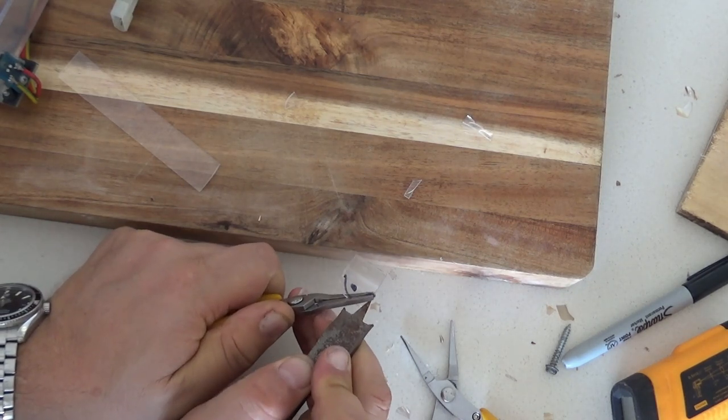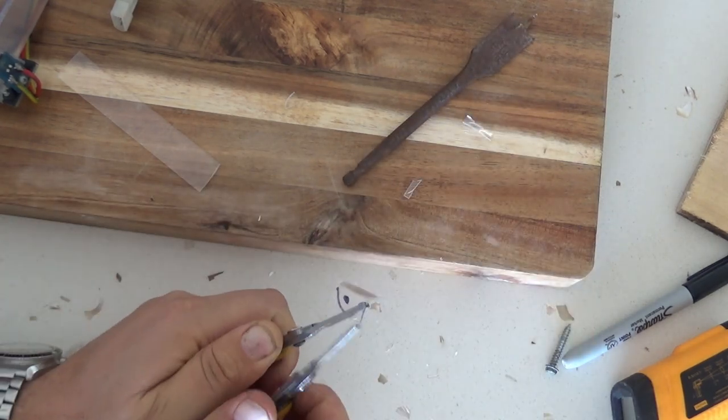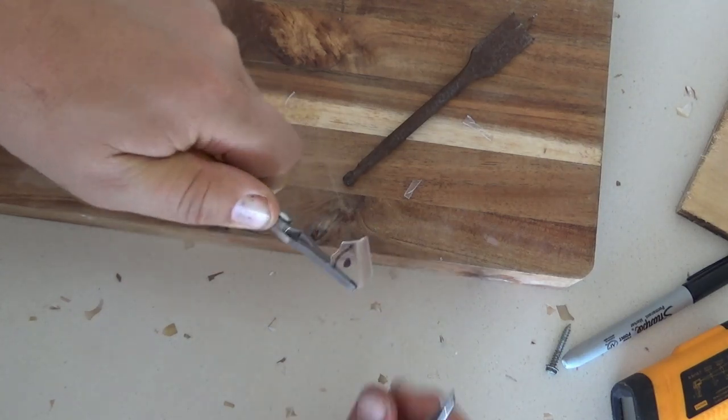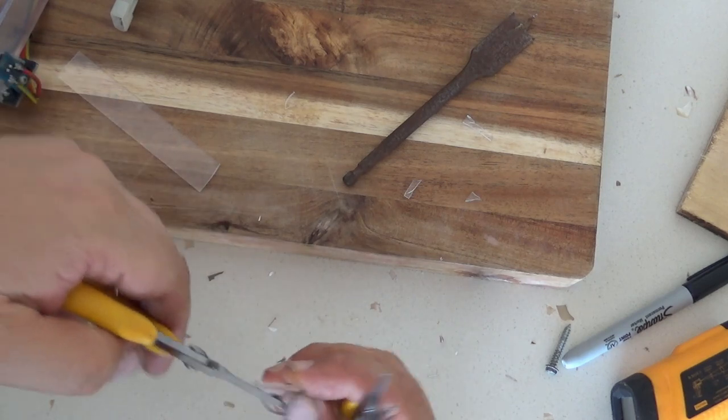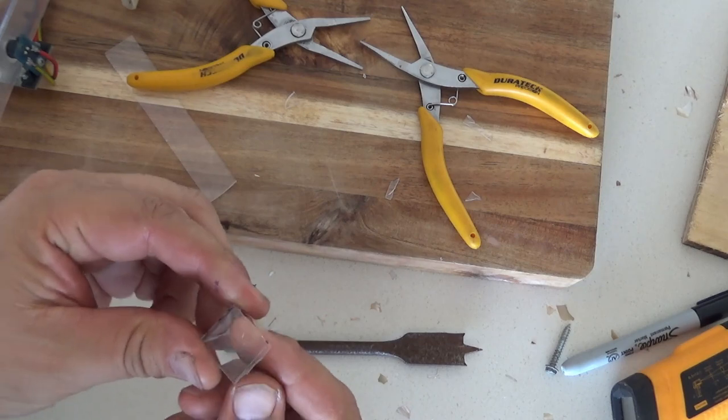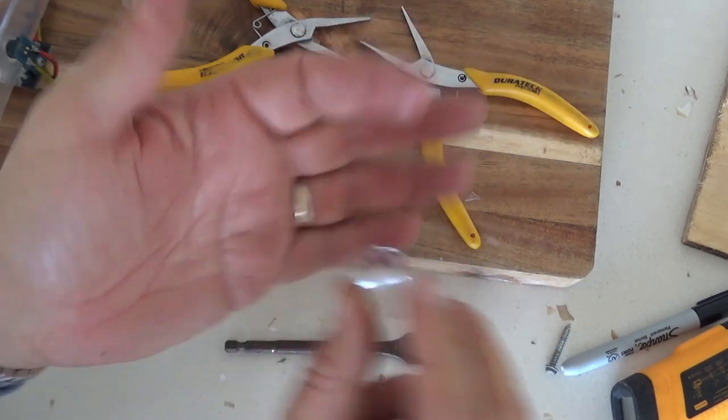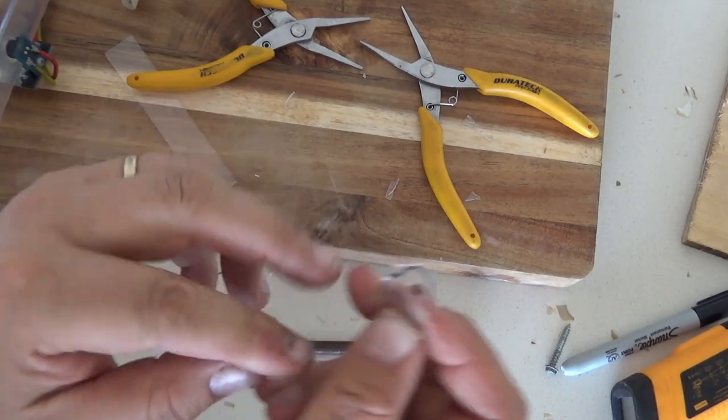You can take anything sharp and score a line of where you want it to crack. I've got a drill bit here. Then take a pair of pliers and bend it up the other way. Bend it away from where you've scored and you get a nice line. If you don't score it, you end up something like that. So now this is ready to go and get sanded.